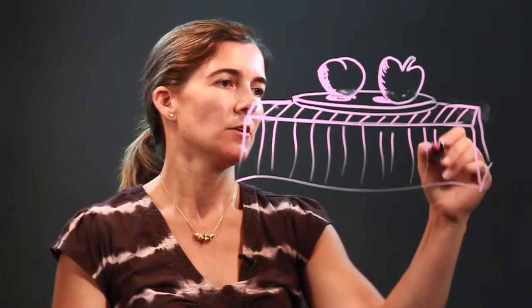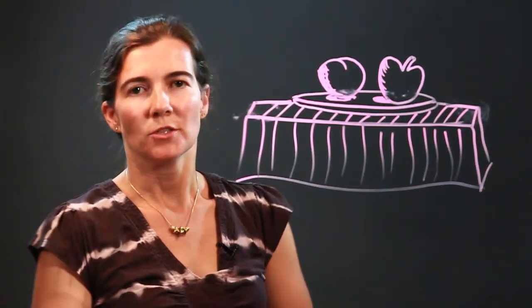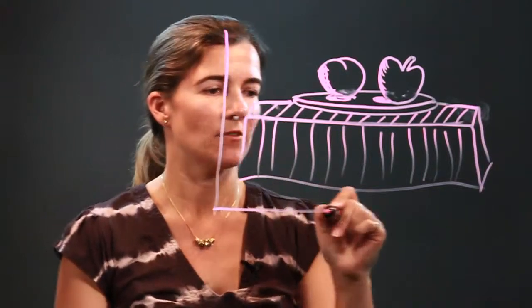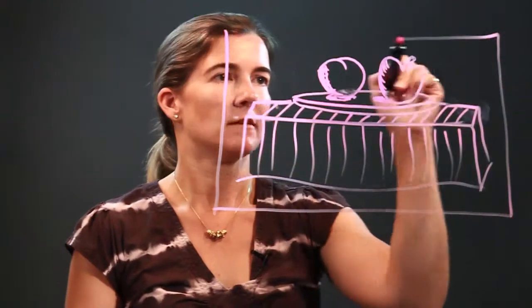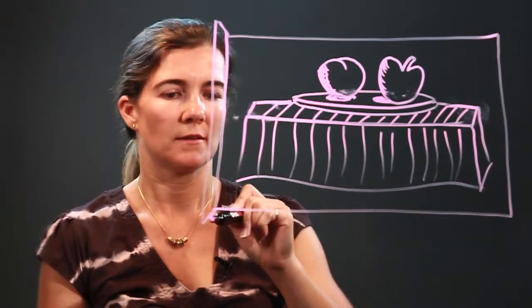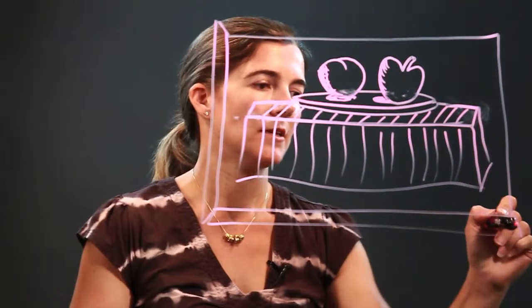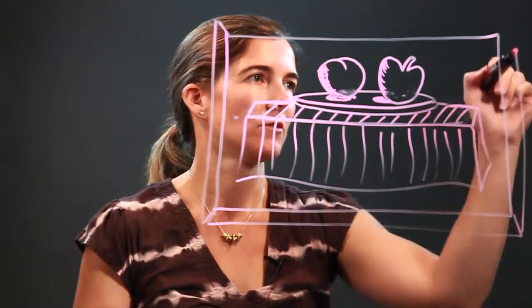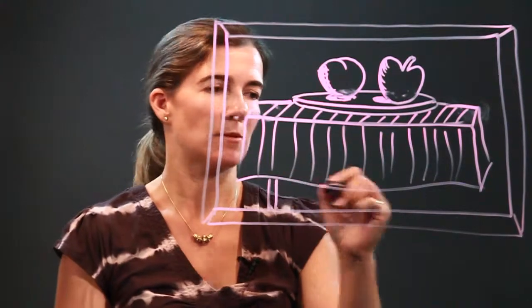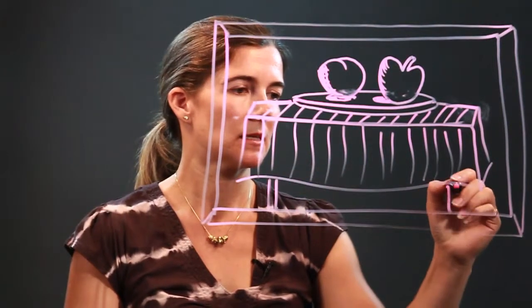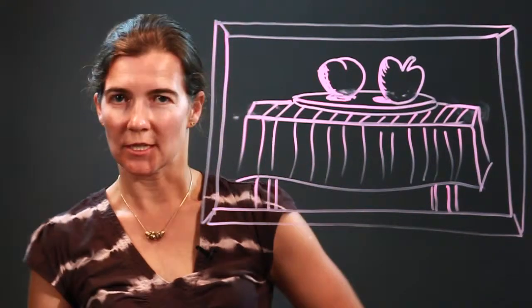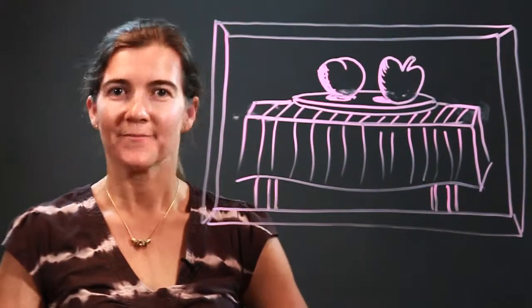And so here you have two fruits on a table — the still life. And if you'd like, you can put a frame around it. Let's give the table some legs — four legs for the table. You have your still life portrait. Enjoy.